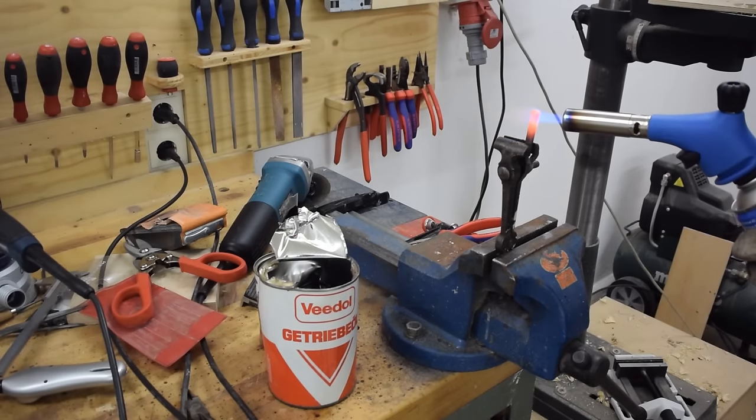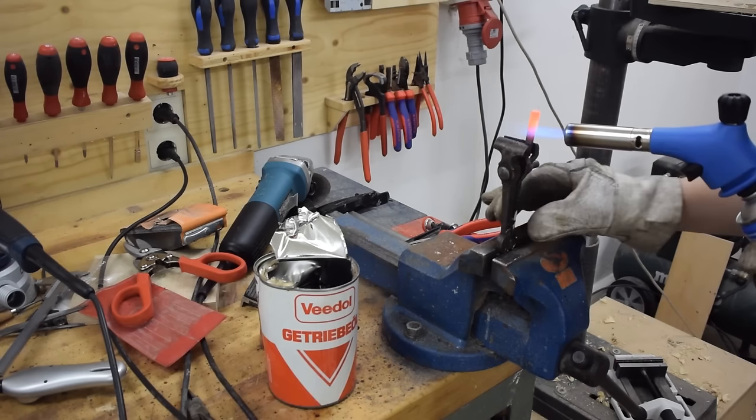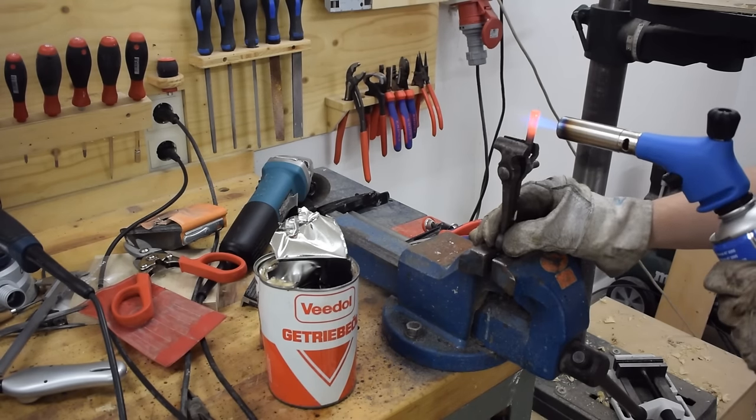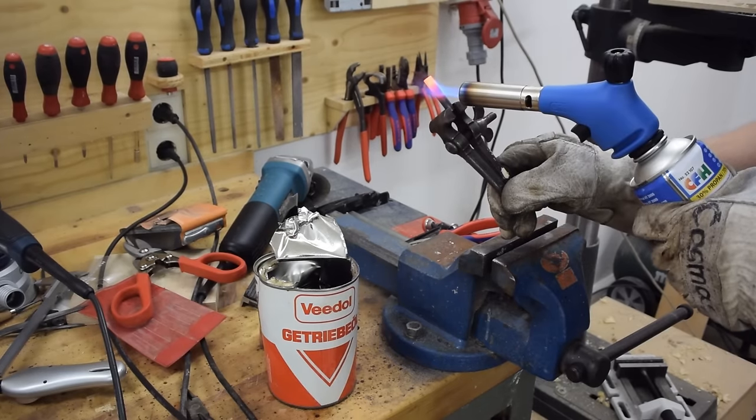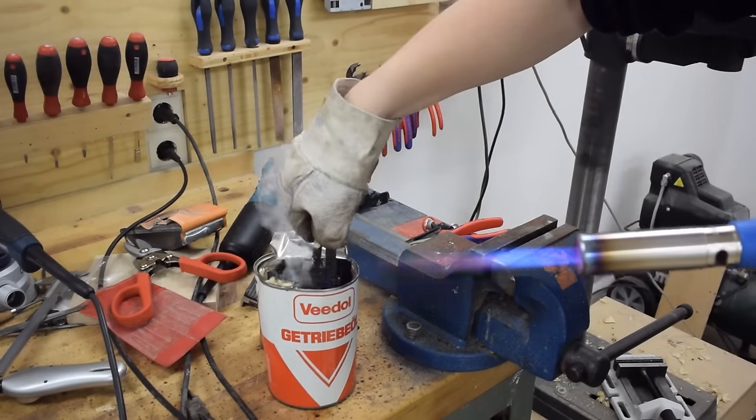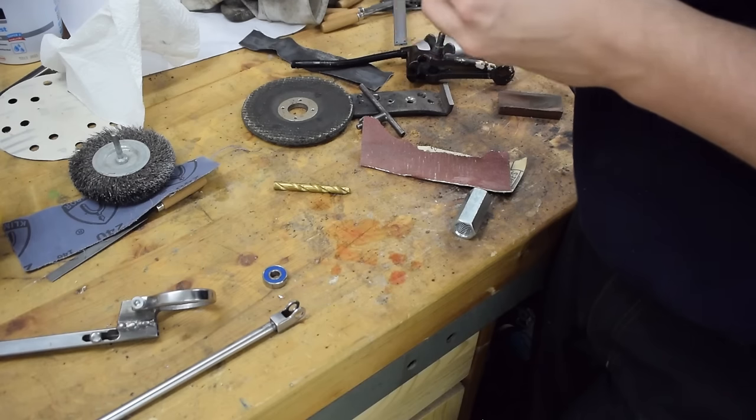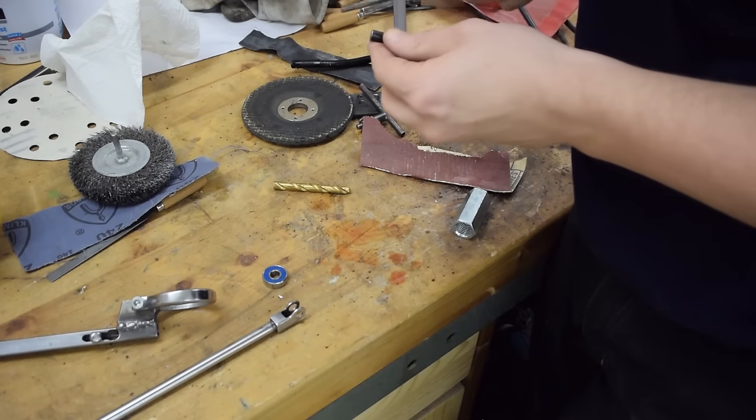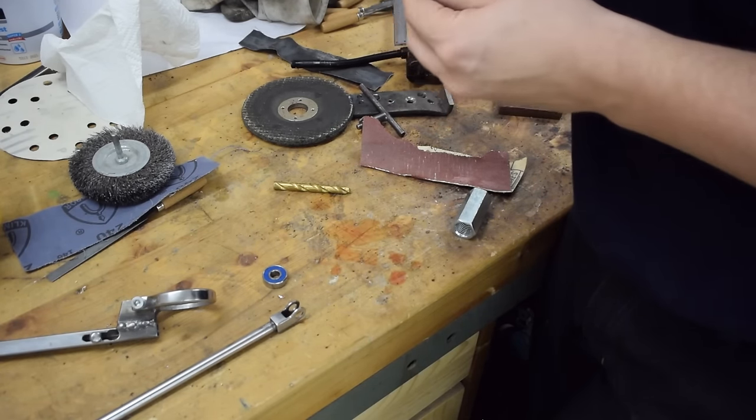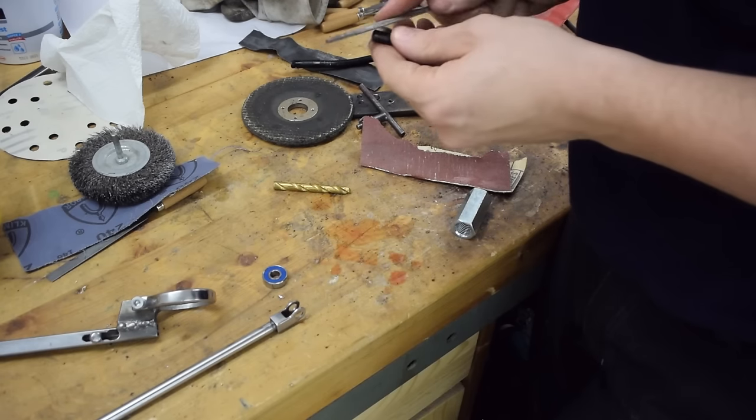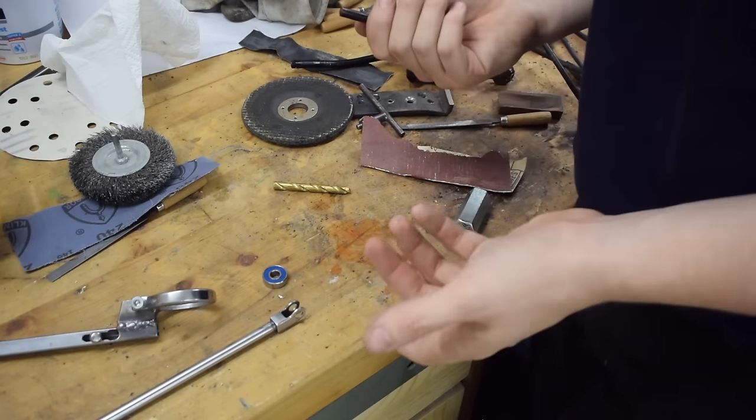That little skateboard bearing is gonna crap out sooner or later. And then the whole thing is gonna spin around the axle. So I might as well harden it. Well, I'd say 65 degrees cheesecake. I have no idea if this is any harder than before. Probably not. But whatever.